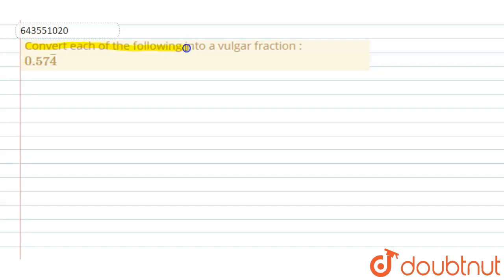each of the following into a vulgar fraction: given 0.574 bar. So we have to convert 0.574 bar into a regular fraction. Let's assume that x equals 0.574 bar.